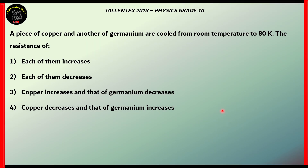Here comes our first question. This question is from physics. A piece of copper and another of germanium are cooled from room temperature to 80 degrees Kelvin. The resistance of each of them: increases, decreases, copper increases and germanium decreases, or copper decreases and germanium increases. Which of these is the right option?